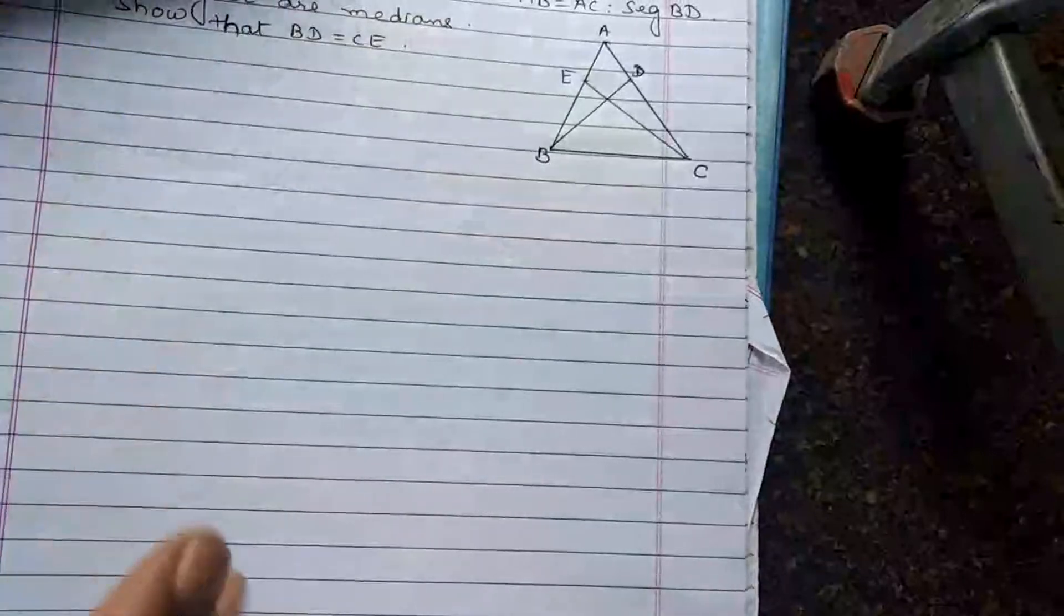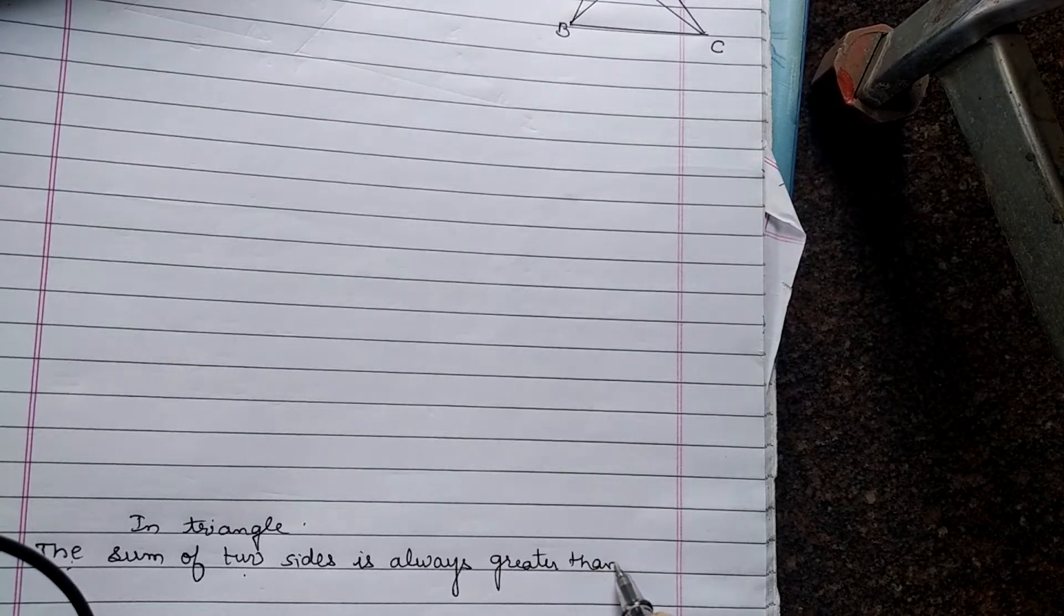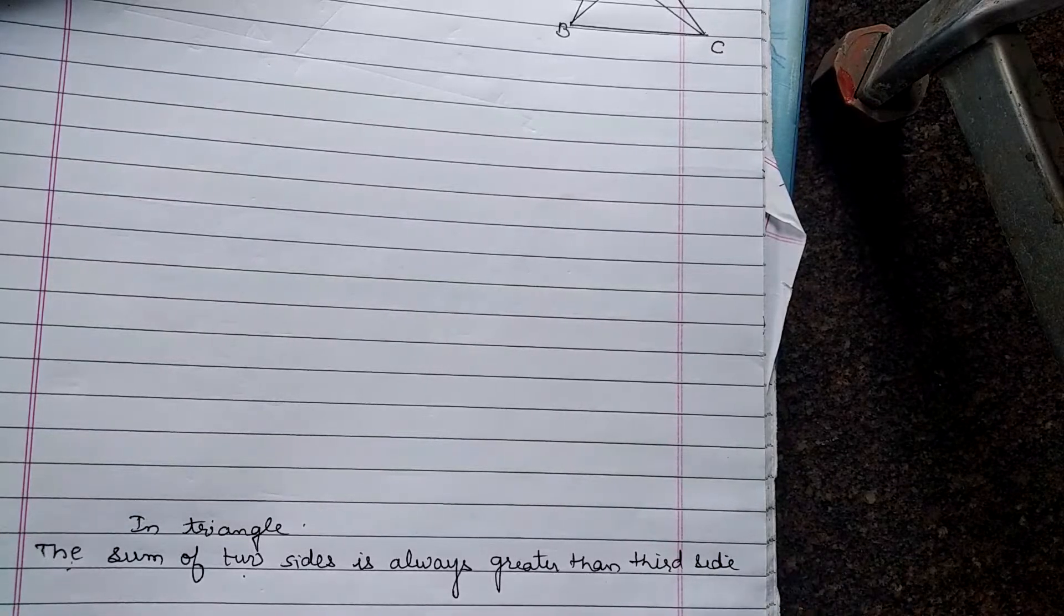We have the theorem that the sum of two sides is always greater than the third side. So, we will say that the sum of two sides is always greater than the third side. We will draw the triangle in this condition. The first condition is the sum of two sides is always greater than the third side. So, we will not satisfy this condition.